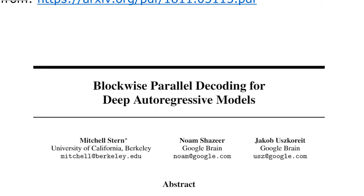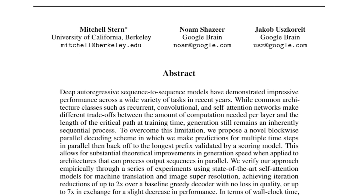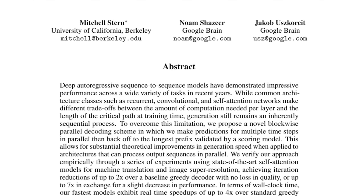Today we'll look at 'Blockwise Parallel Decoding for Deep Autoregressive Models' by Mitchell Stern, Noam Shazeer, and Jakob Uszkoreit of UC Berkeley and Google Brain. This is a bit more of an engineering paper than usual. It's basically an engineering trick to get autoregressive models to decode faster, while either fully preserving their performance or accepting a slight drop in performance for even greater speed.